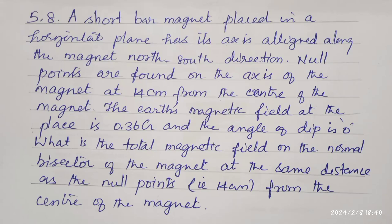A short bar magnet placed in a horizontal plane has its axis aligned along the magnetic north-south direction. Null points are found on the axis of the magnet at 14 centimeter from the center of the magnet. The earth's magnetic field at the place is 0.36 gauss and the angle of dip is 0.